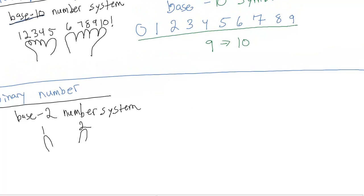In a base-2 number system, we would only have two symbols. Instead of making up new symbols to represent binary numbers, we simply use the first two symbols of the base-10 system. In binary, we only have two symbols: 0 and 1.